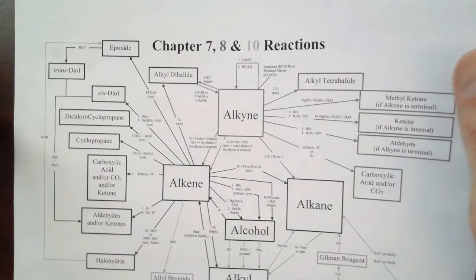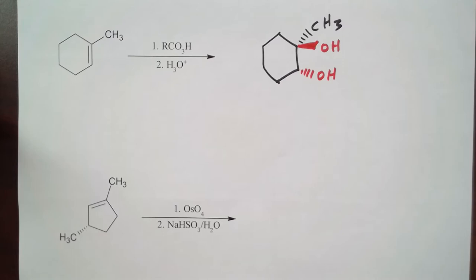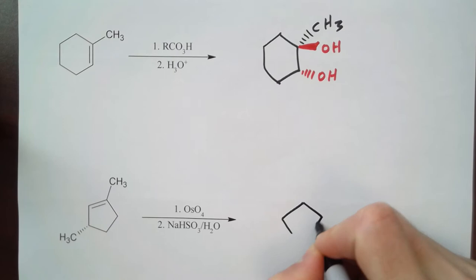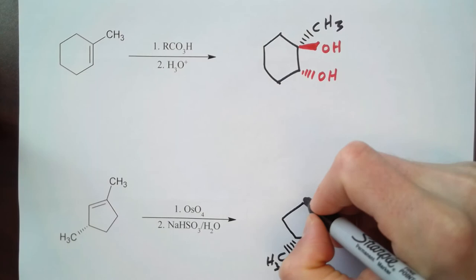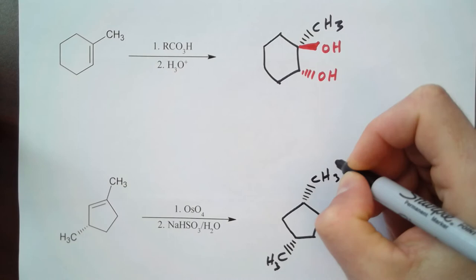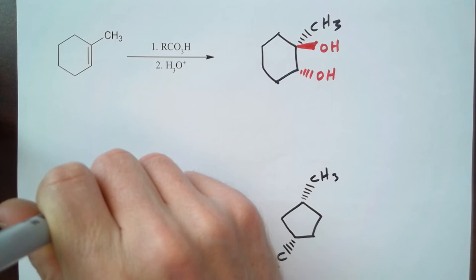So a cis diol puts both alcohols on the same side of the double bond. So if I go ahead and draw out this molecule, we're going to put this methyl group in the background, so we're adding to the top of the double bond, so we're adding both hydroxyl groups coming down from the top.